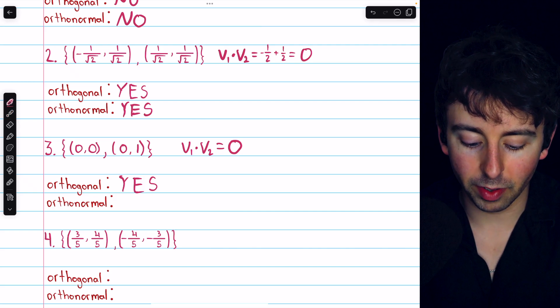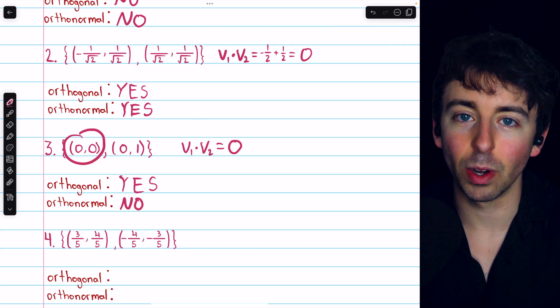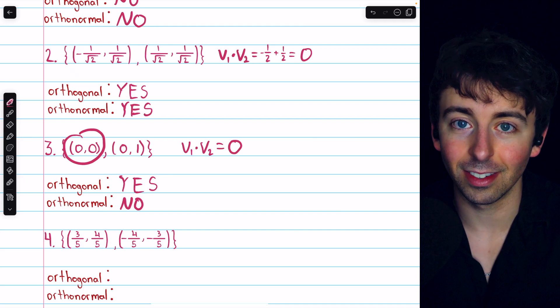So, the vectors are orthogonal. Are they orthonormal? Well, trivially, we say no, because that's a 0 vector. It's not a unit vector. Its magnitude is 0.